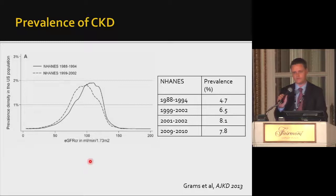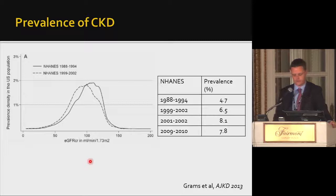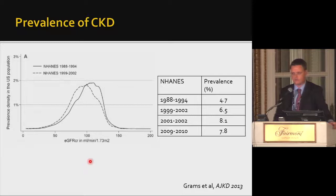How many patients actually have CKD? Prevalence has been estimated using NHANES data going back to 1988. In the initial surveys it was estimated at around 5%, increasing gradually to about 8% by 2001-2002, and has since stabilized. The prevalence of CKD increases rapidly with age, and the rise over time is likely because more individuals are living long enough to develop CKD.